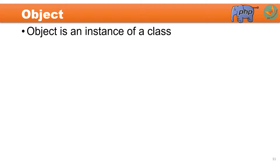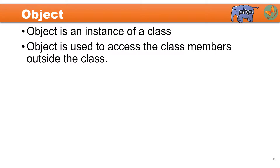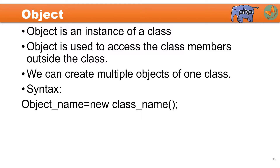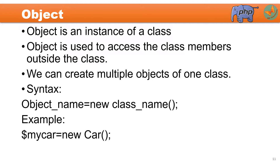Now moving ahead, let us try to understand what is an object. It is nothing but an instance of a class. It is used to access class members outside the class, and we can create multiple objects of one class. The syntax is: object name equals new class name. Do not forget to put the dollar sign in front of the object name. So here, dollar my_car is an object variable of class car, and new initializes this object variable.